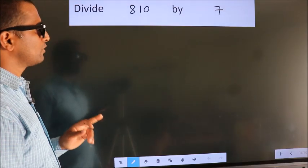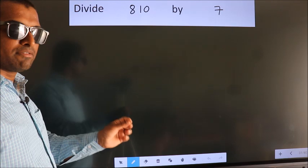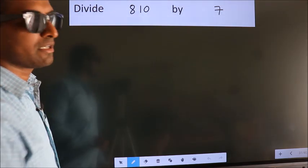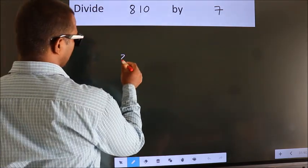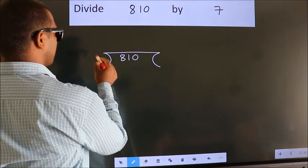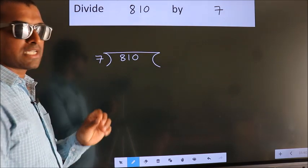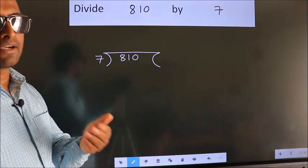Divide 810 by 7. To do this division, we should frame it in this way. 810 here, 7 here. This is your step 1. Next.